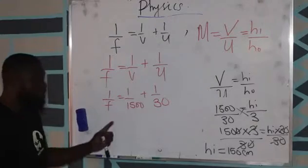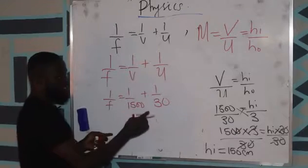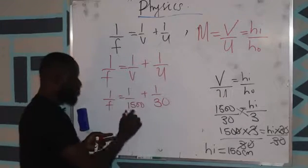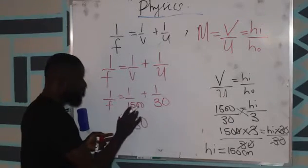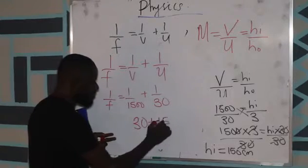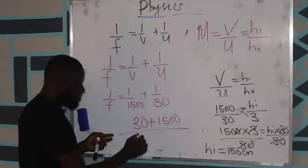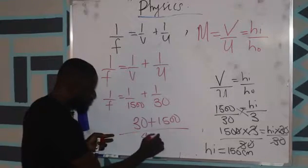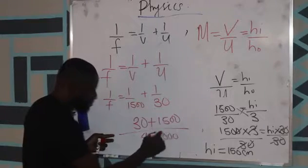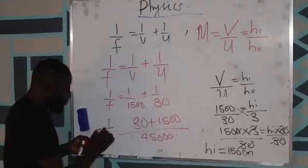So now let's look for the LCM. It's very easy. 30 times 1 is 30. 1500 times 1, 1500 over 1500 times 30. We have 45,000, which is equal to 1 over f.